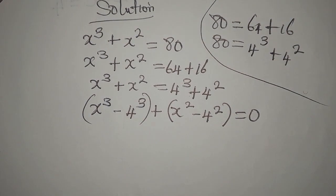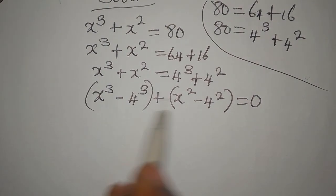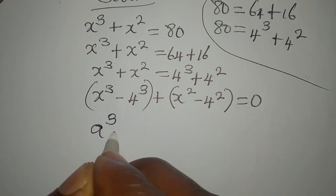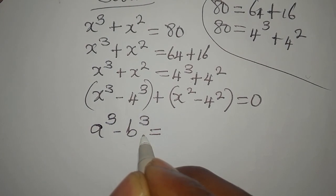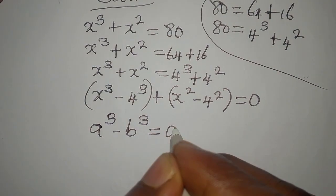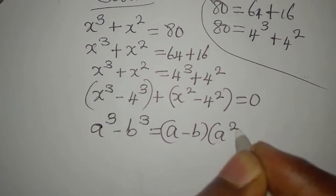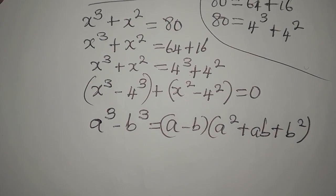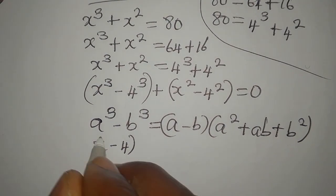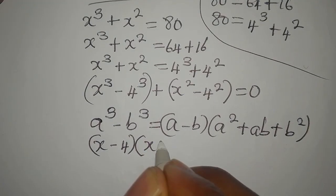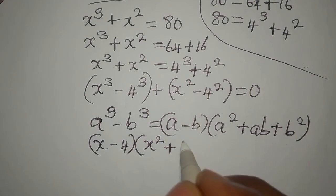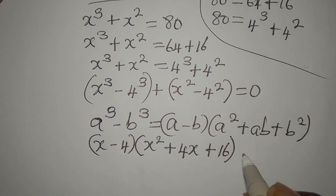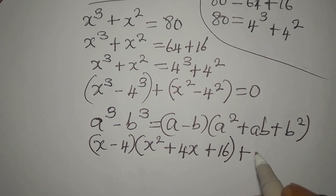From here we have difference of two cubes and there we have difference of two squares. The difference of two cubes — a³ minus b³ — factors as (a minus b)(a² + ab + b²). So here it becomes (x minus 4)(x² + 4x + 16).